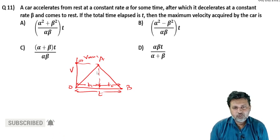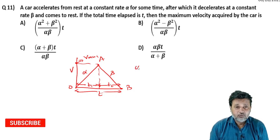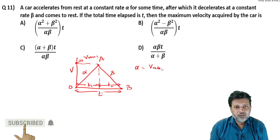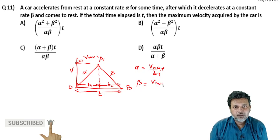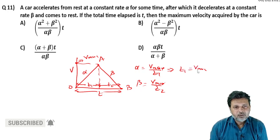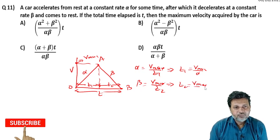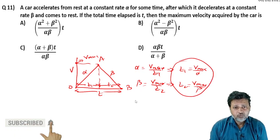पहली journey का slope क्या होगा — slope होगा alpha। इसका slope क्या होगा — beta। तो alpha is equal to V_max upon T1, और beta is equal to V_max upon T2। तो T1 की value होगी V_max upon alpha, और T2 की value होगी V_max upon beta।